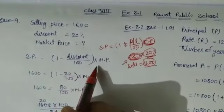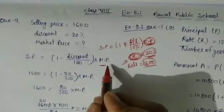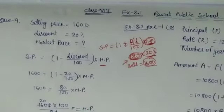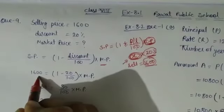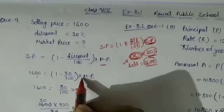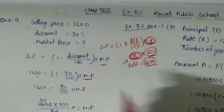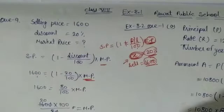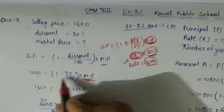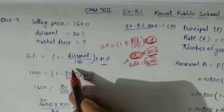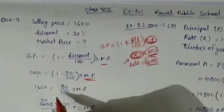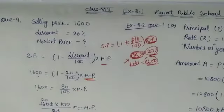SP equal to 1 minus discount upon 100 into MP. Using this formula, because our question does not give any cost price, we will find out. SP we know is 1,600, equal to 1 minus discount. How much discount? 20% upon 100 into MP. So 100 minus 20 is 80 upon 100 into market price.